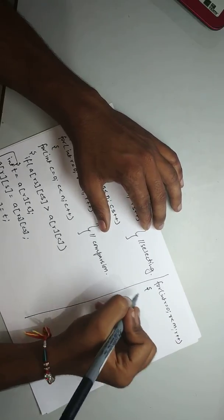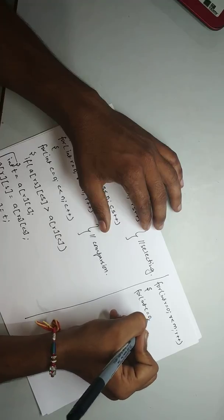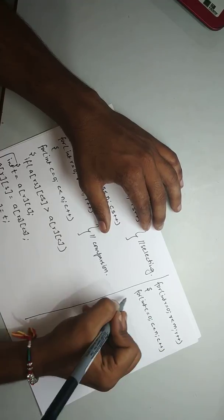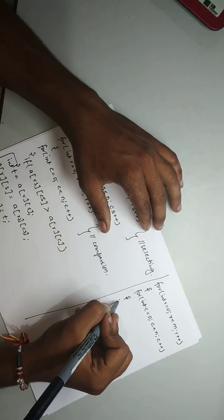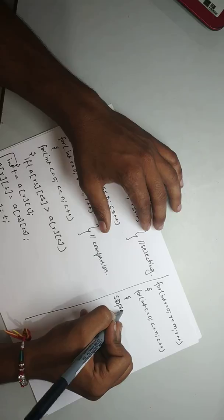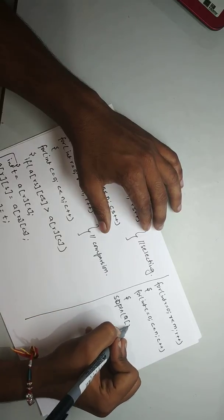Now print the array. For printing we need only two variables. For int r is equal to 0, less than m, r will be plus plus. Then for int c is equal to 0, less than n, c will be plus plus.